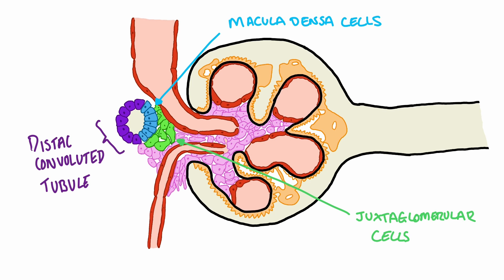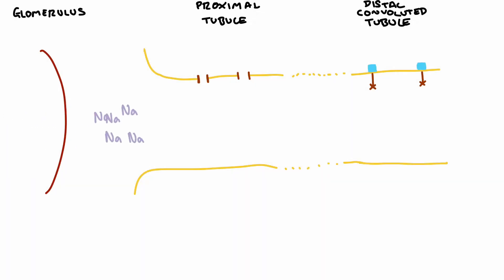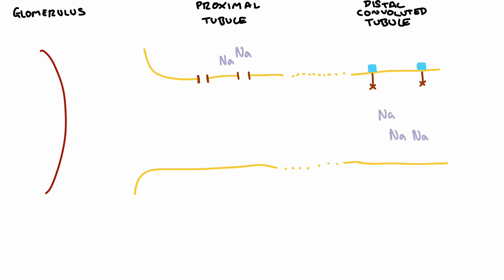This feedback mechanism links the amount of sodium in the distal convoluted tubule and the diameter of the afferent arteriole. With a normal glomerular filtration rate, plasma containing sodium filters out of the glomerulus into the Bowman's space and then into the proximal tubule. In the proximal tubule, sodium is reabsorbed at a constant rate, and the plasma continues through the nephron to reach the distal convoluted tubule. Macula densa cells in the epithelium of the distal convoluted tubule detect the sodium levels, which at normal filtration pressures will be normal.